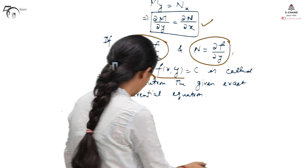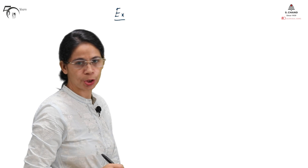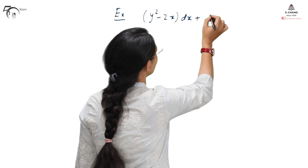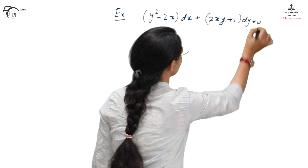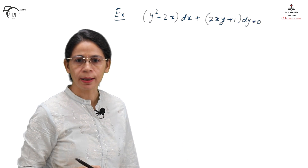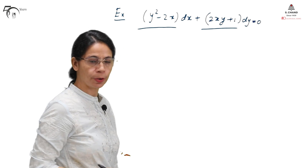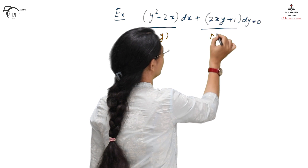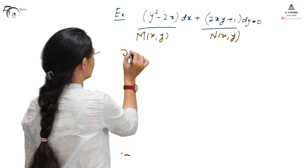We will make this clearer by taking one example. Let the differential equation be (y² - 2x) dx + (2xy + 1) dy = 0. Comparing it with the standard form M(x,y) dx + N(x,y) dy = 0, we identify M(x,y) and N(x,y), and we need to check whether they satisfy the exactness condition.